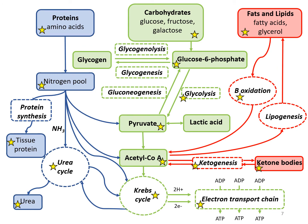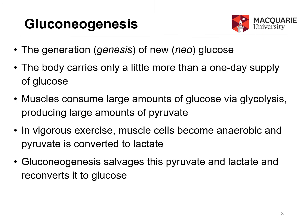Now let's have a look at gluconeogenesis. Genesis means generation and neo means new, so we're talking about the generation of new glucose. This is very important when the body is in an underfed, starved, or fasted state. We really only carry as little as one day's supply of glucose, but we need to maintain blood glucose levels constantly at a level above four.